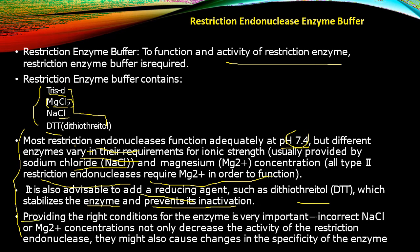Providing the right conditions for the enzyme is very important. Incorrect NaCl or Mg2+ concentration not only decreases the activity of the restriction endonuclease but may also cause changes in the specificity of the enzyme. The optimum amount of NaCl or Mg2+ concentration is required, otherwise it may lead to total failure in the process of gene cloning and other processes.